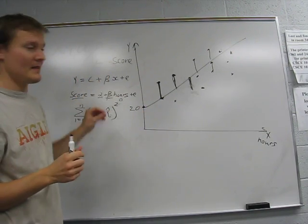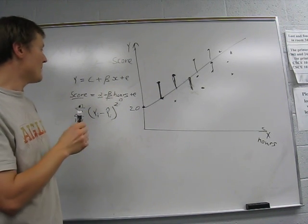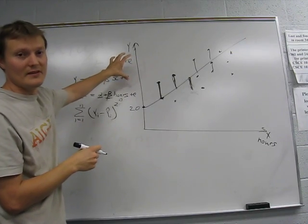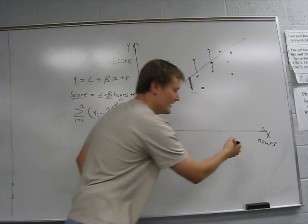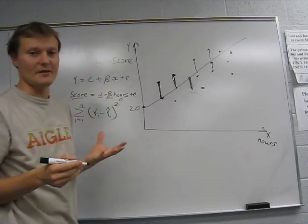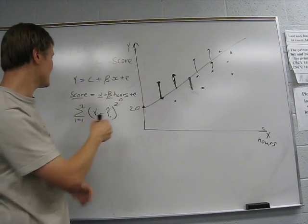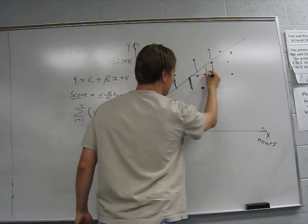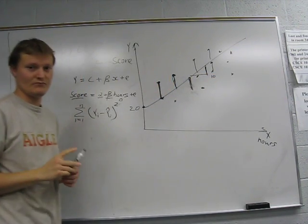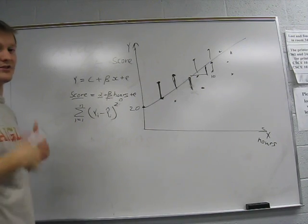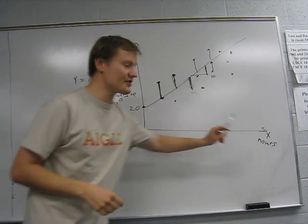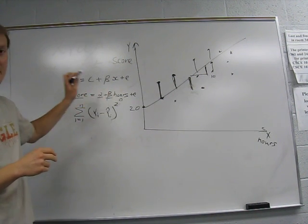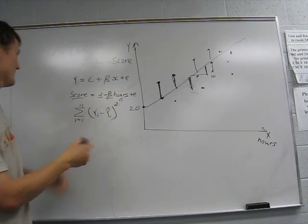What does the beta say? The beta tells you by how much the value of the independent variable changes if the value of the dependent variable changes by one unit. So let's suppose our beta, the beta is the slope of the line, let's suppose this would be 10. So that would mean as a student studies an extra hour for the exam, we expect their score to increase by 10 points.